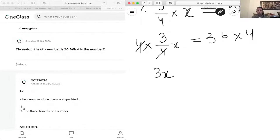X equals, in my calculator, 36 times 4 is 144.